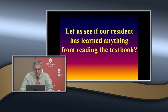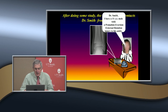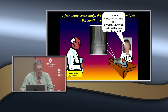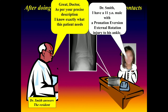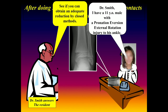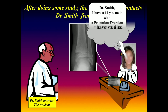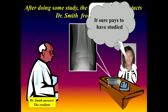In conclusion, the resident studied and called Dr. Smith again: 'Dr. Smith, I have an 11-year-old with a pronation-eversion-external rotation injury to his ankle.' Dr. Smith responded: 'Because of your precise description, I know exactly what this patient needs — see if you can achieve adequate reduction by closed methods, but be sure you don't have interposed periosteum.' The resident learned that it pays to have studied. Thank you.